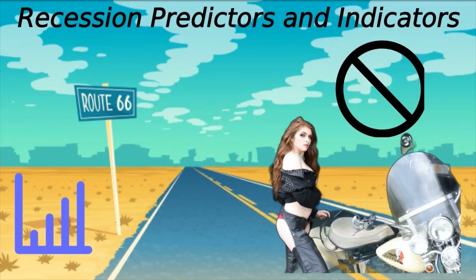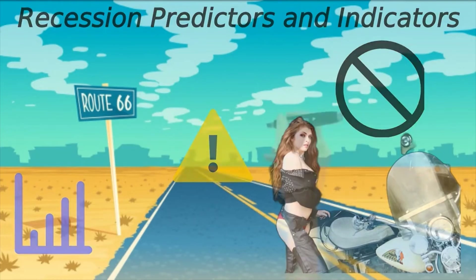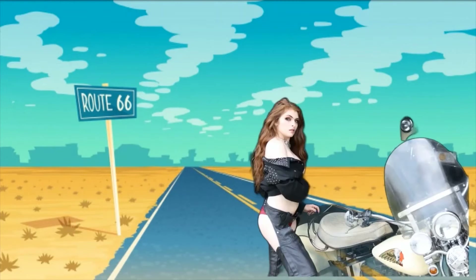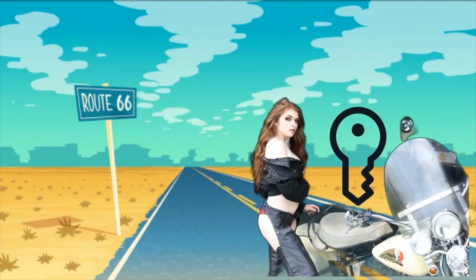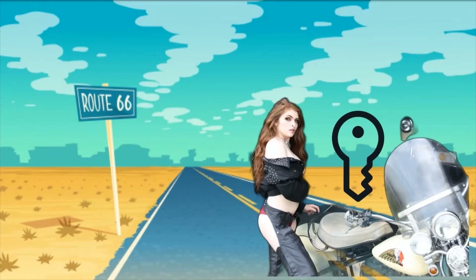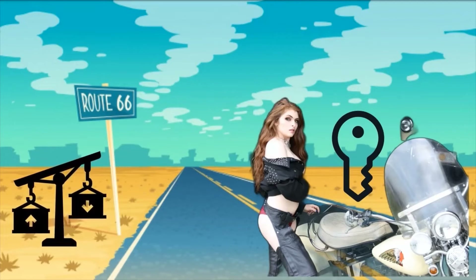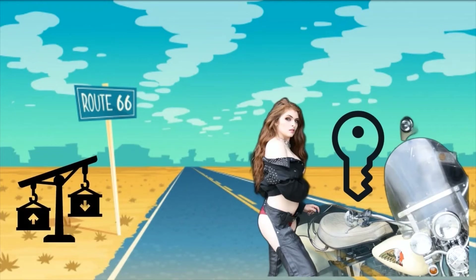These leading indicators include the ISM Purchasing Managers Index, the Conference Board Leading Economic Index, the OECD Composite Leading Indicator, and the Treasury yield curve. These are critically important to investors and business decision makers because they can give advance warning of a recession. Second are officially published data series from various government agencies that represent key sectors of the economy, such as housing stats and capital goods new orders data published by the U.S. Census.